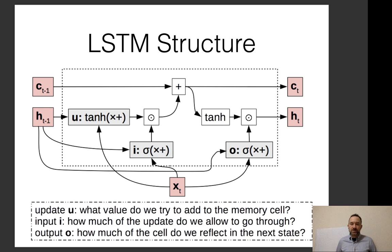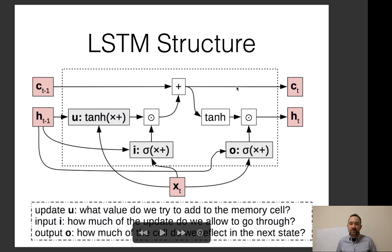The LSTM has two vectors it passes among time steps: the vector C, the LSTM cell, and the vector H, the LSTM hidden state. The LSTM cell has an additive connection only between the previous cell state and the next cell state — a straight additive connection all the way through from time step to time step — with information coming in and going out.